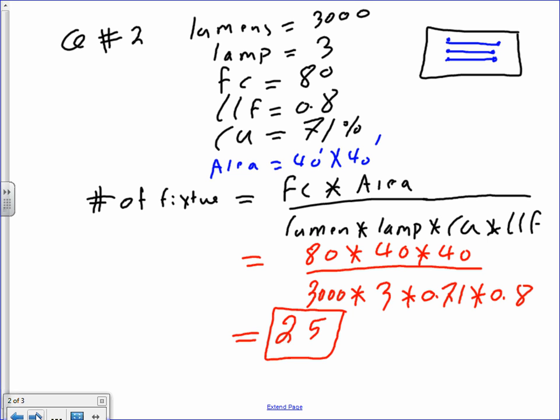Here's my foot candle is 80 times 40 by 40 is the area. Divide by 3,000 lumens. 3 lamps because I'm using a 3 lamper. 0.71 coefficient of utilization. I don't want you to calculate it. I'm already giving it to you right here. And 0.8 is light loss factor. That will end up with 25 fixtures. Cool?